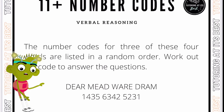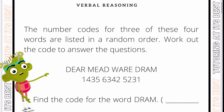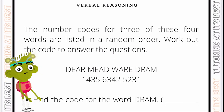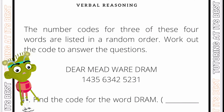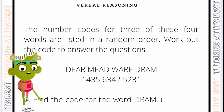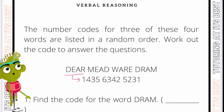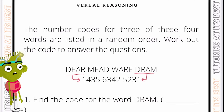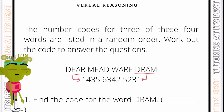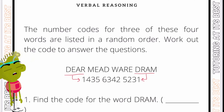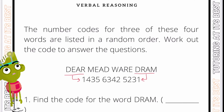Word number codes will simply test you on matching letters to numbers. In these questions there are four words, and three of the words have been given a code. The codes are not written in the same order as the words, which means that 'dare' does not reflect 1435 and 'dram' will not reflect 5231. We need to work out the correct answers and choose from the four choices available. A good way is to find two words which share the same letter, then look for two number codes which share a number in the same position as the shared letters.